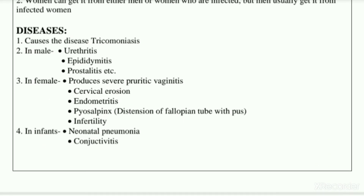Diseases caused by Trichomonas vaginalis: it causes trichomoniasis. In males it causes urethritis — infection of the urethra — epididymitis, which is inflammation of the epididymis, and prostatitis, which is inflammation of the prostate. A useful tip: if a disease name ends in '-itis,' it generally indicates inflammation.